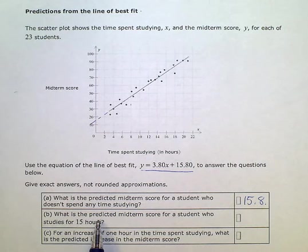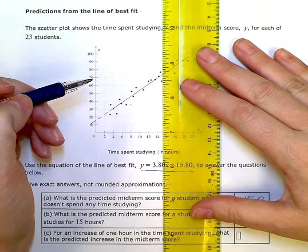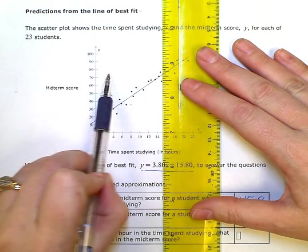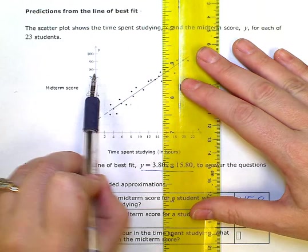What is the predicted midterm score for a student who studies 15 hours? Now, we can see from our graph here, at about 15, the midterm score should be between 70 and 80, just kind of approximating, that point right there.